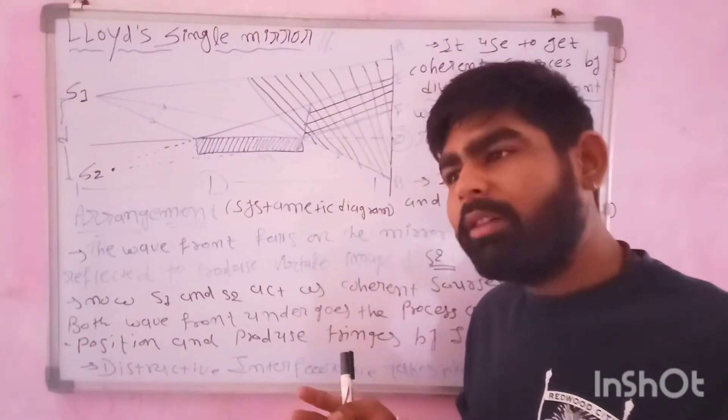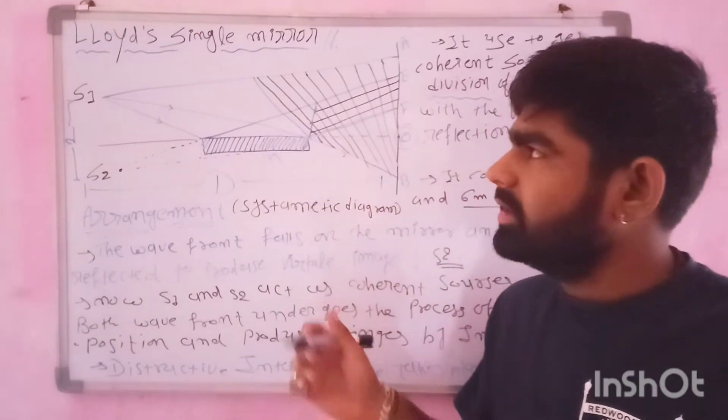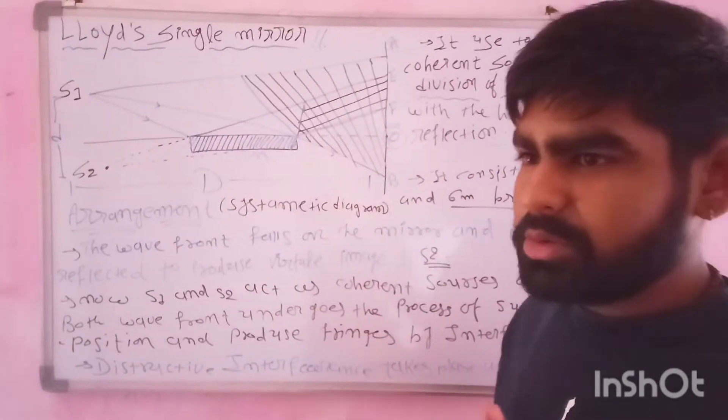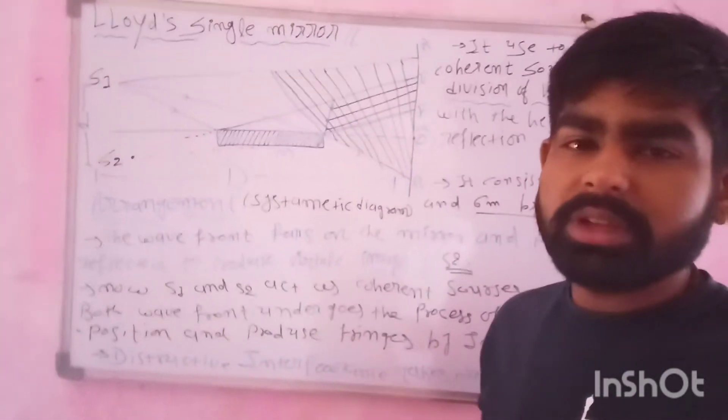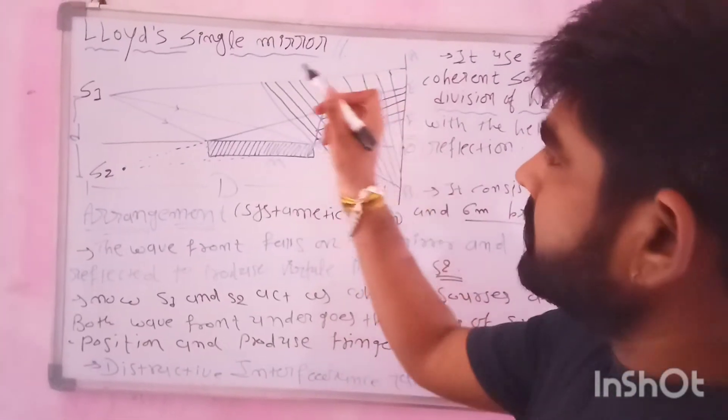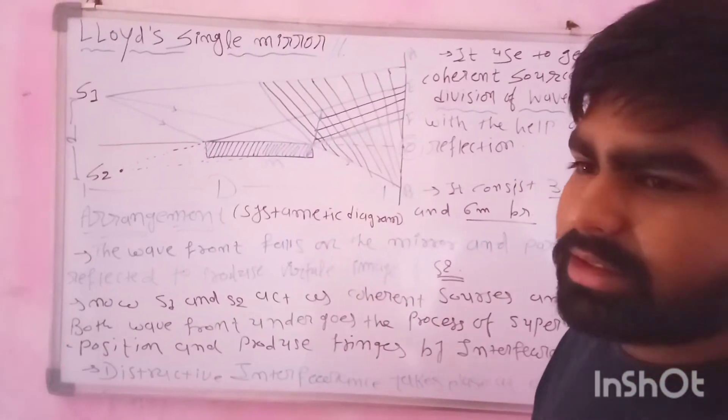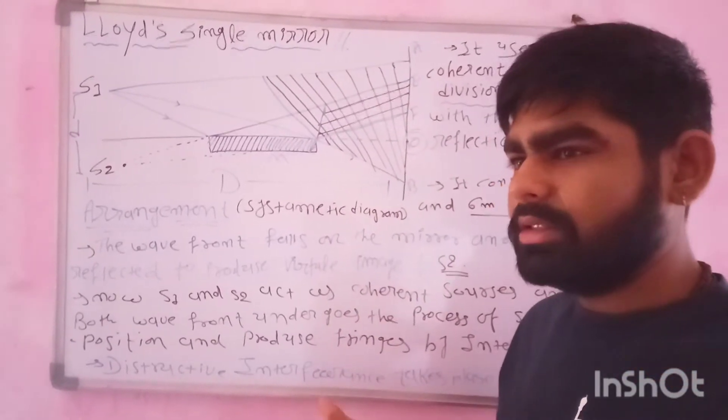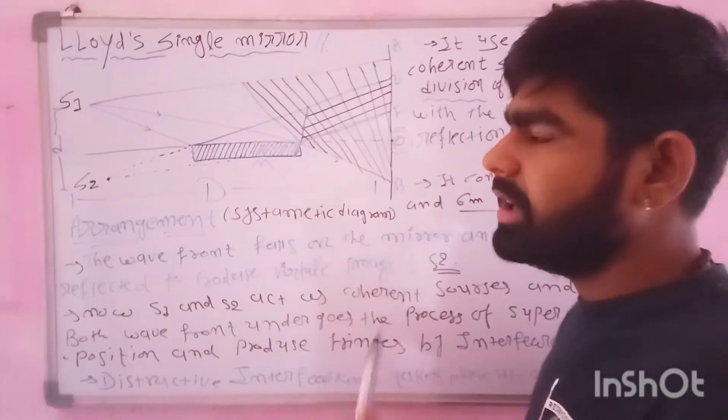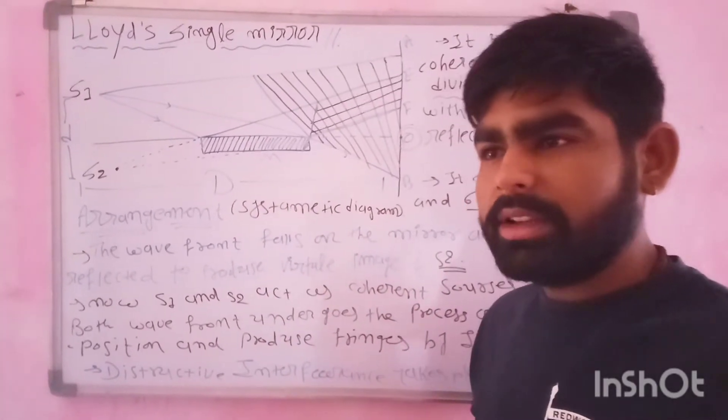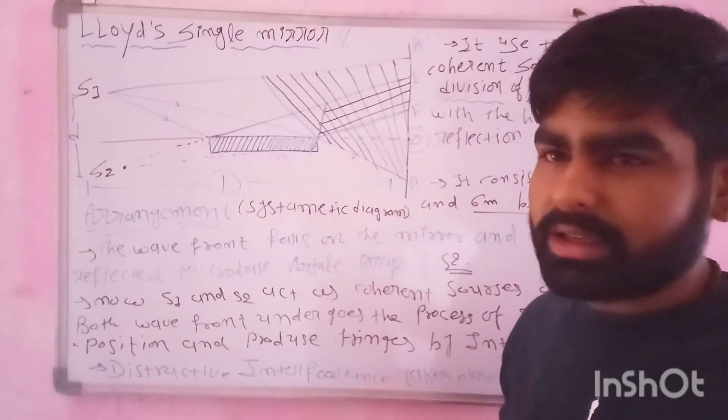These two topics are wave optics, and after the use of interference, the fringes are produced. So, Lloyd, like Fresnel, had its own experiment. Lloyd has used a single mirror to use interference with fringes produced.